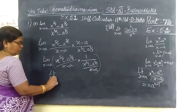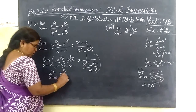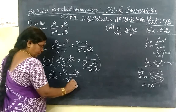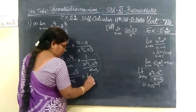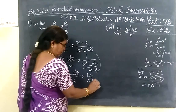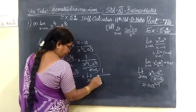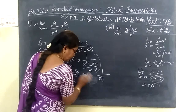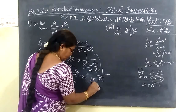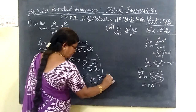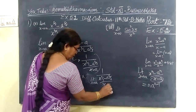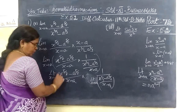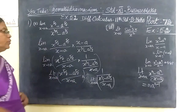X tends to A. This is written as it is. Then equal limit x tends to A, 1 by x, x over 2 by 3, minus x over 2 by 3, divided by x minus A. This is right as we are.